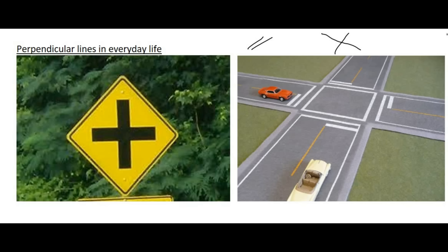Here we can see some everyday life examples. This signboard shows two lines that are perpendicular because they hit each other at 90 degrees, going in completely opposite directions. This four-way stop is also an example of perpendicular lines because these lines hit each other at 90 degrees. So perpendicular lines hit each other at 90 degrees.